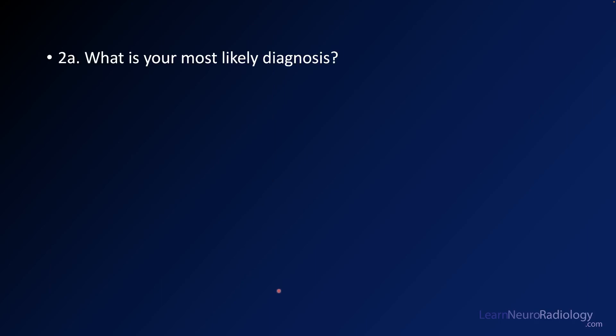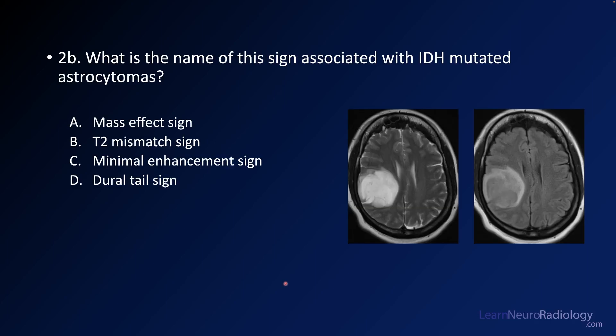Your first question on your exam is probably going to be: what's the most likely diagnosis? You should be able to come up with a pretty short differential. Your second question is: what is the name of the sign associated with IDH-mutated astrocytomas that you see in this case? Is it the mass effect sign, the T2 mismatch sign, the minimal enhancement sign, or the dural tail sign?